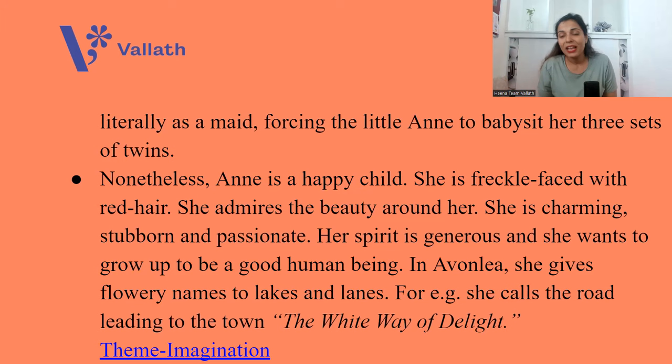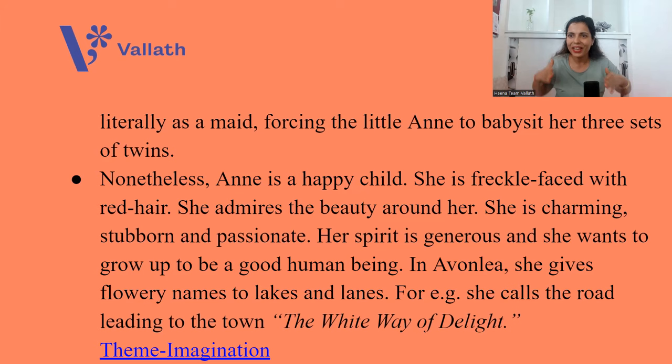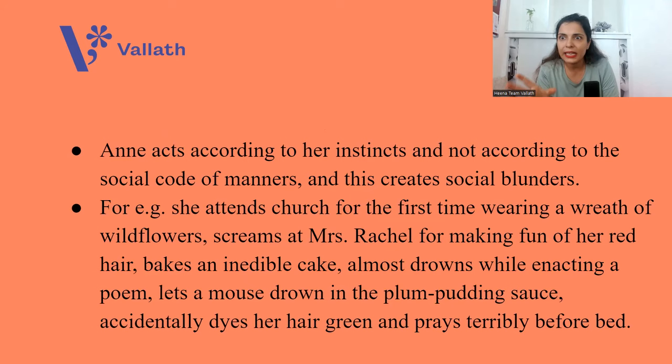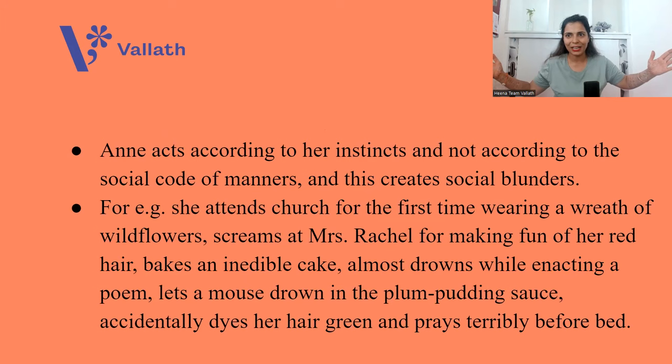In the town of Avonlea, Anne gives flowery names to lakes and lanes. For example, she calls the road leading to the town 'the White Way of Delight.' The theme here is imagination — the imagination of this little 11-year-old orphan girl called Anne Shirley. She acts according to her instincts, her imagination, and her fantasies rather than the social code of manners, and this creates social blunders.